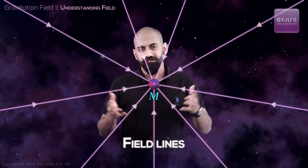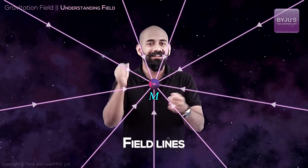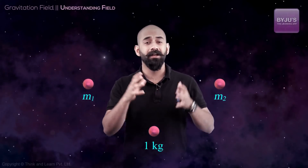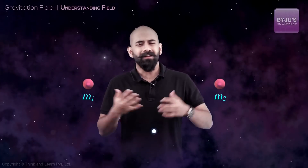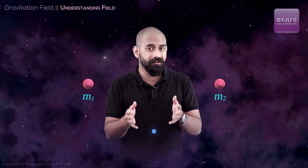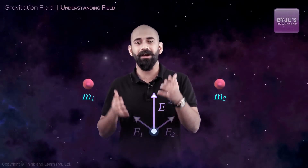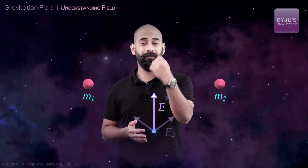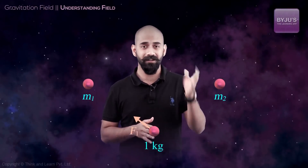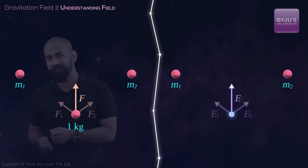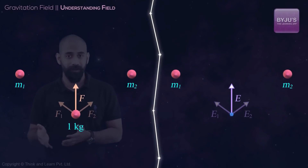Now let's say we have two point masses m1 and m2 and we want to find the field at some point. We place a 1 kg mass there and find the net force — but we can also just add the individual fields vectorially. Since field is force per unit mass and force is a vector, if a 1 kg mass feels forces from both m1 and m2, the net force is their vector sum, so the net field is also the vector sum of the individual fields. You can add fields vectorially at a point.